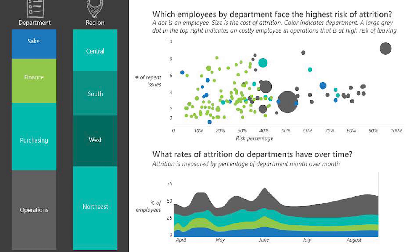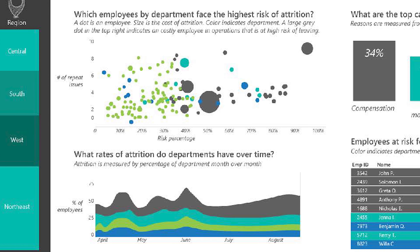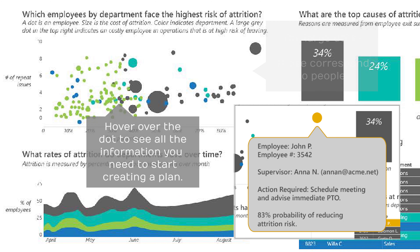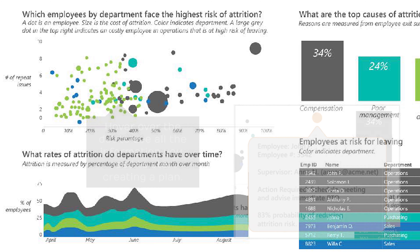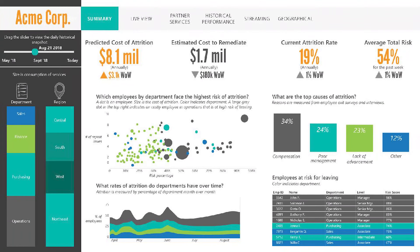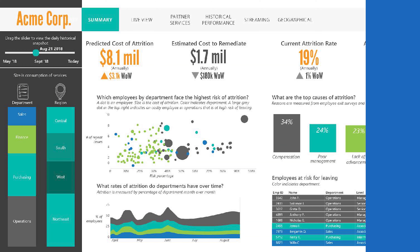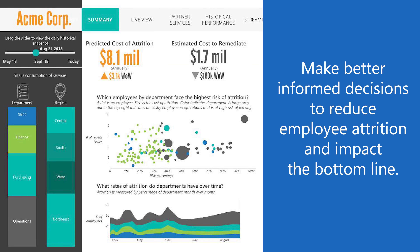Charts are interactive, so you can not only view your organization's data but use it to create an action plan. By utilizing a human resources analytics portal, users across the organization will be able to make better informed decisions that reduce employee attrition and impact the bottom line.